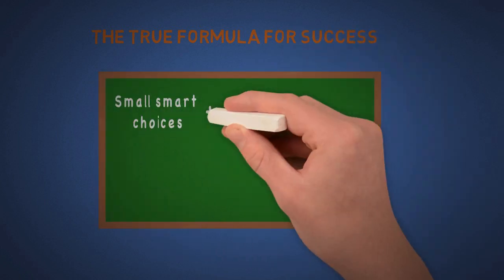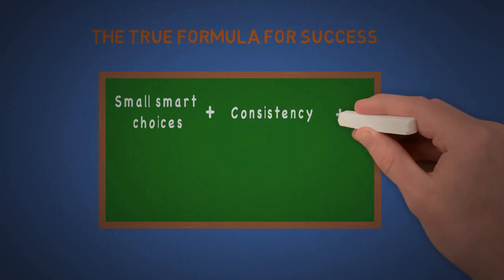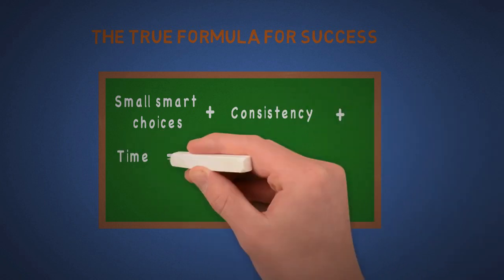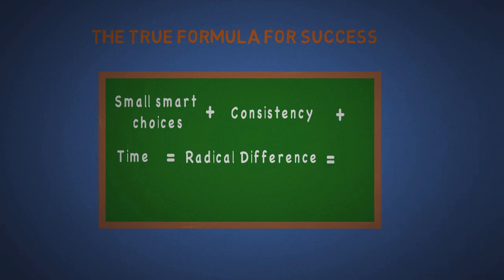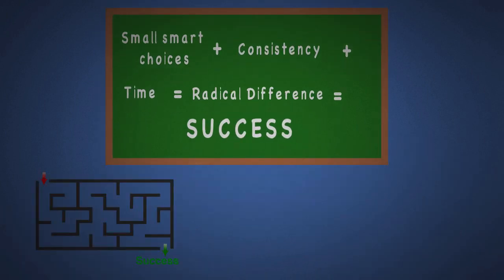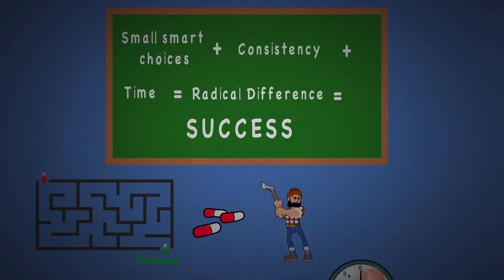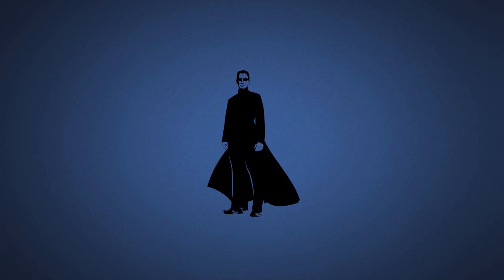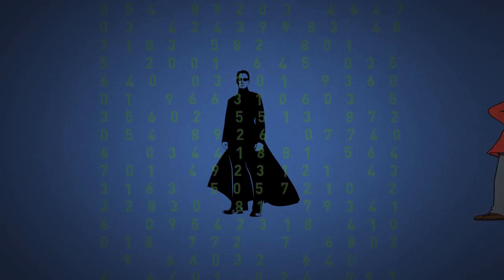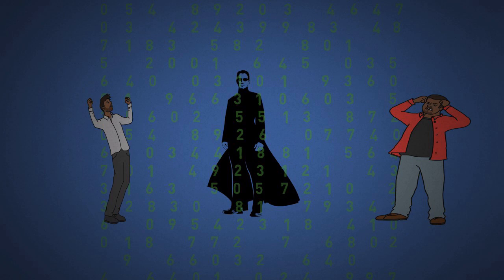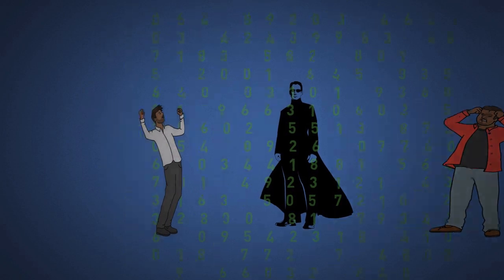Now for the true formula for success. It's really simple: small smart choices plus consistency plus time equals radical difference, which equals success. Like I said, there are no shortcuts or magical pills for success. You just have to put in the work, time, and be consistent. But now that you're aware of the compound effect, will you let it make your life go crashing downhill, or will you take advantage of it to be successful and live the life you've always wanted?